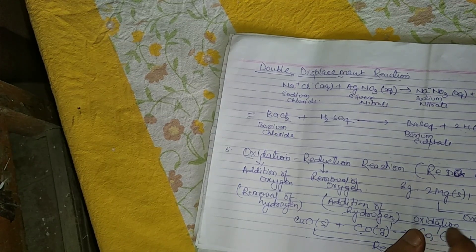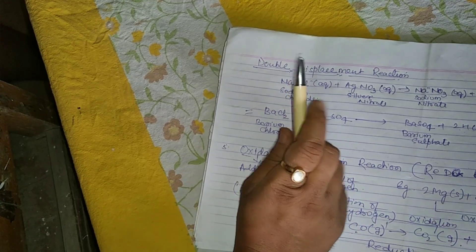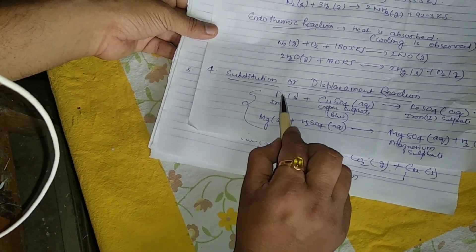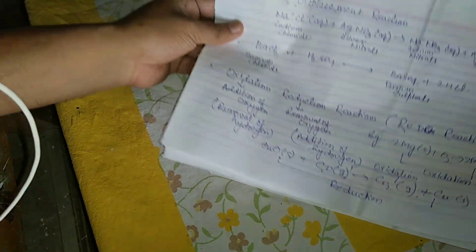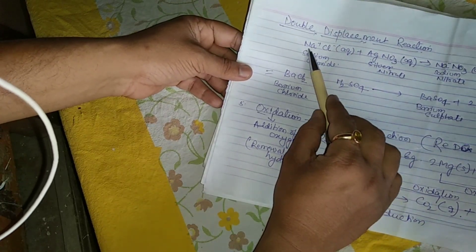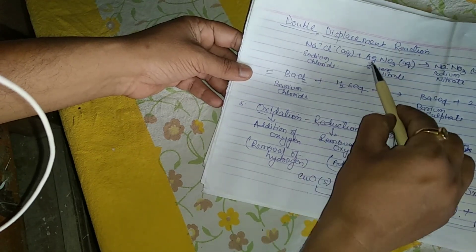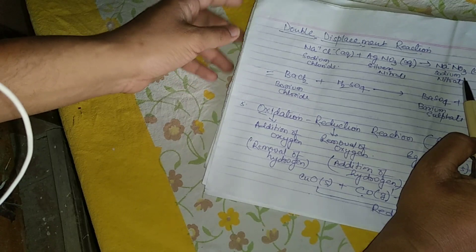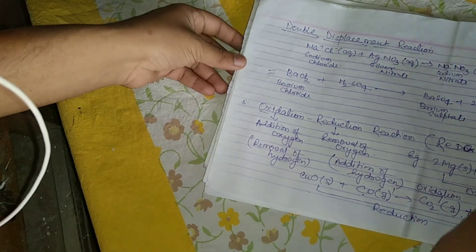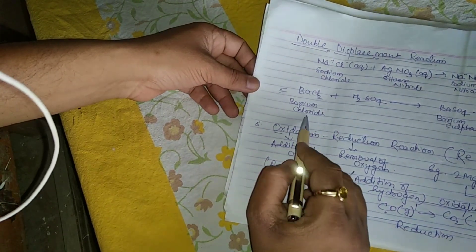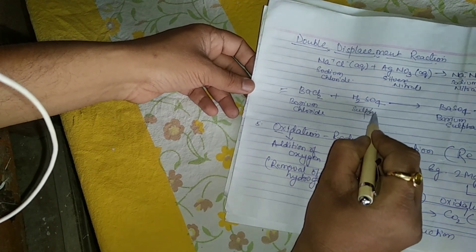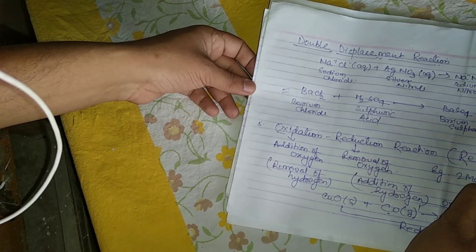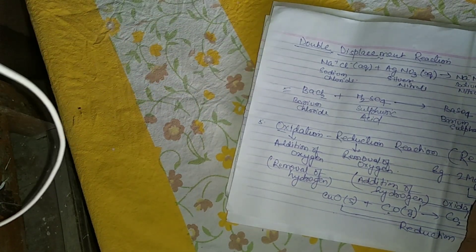Now, the double displacement reaction — this has been asked many times in board exams, and it is also an example of a precipitation reaction. In a single displacement reaction, only one element changes its place. In a double displacement reaction, two elements simultaneously change their places. For example, sodium displaces silver and silver comes with chlorine, while sodium goes with nitrate, forming sodium nitrate and silver chloride. Another important example: barium chloride reacts with sulfuric acid, and barium displaces hydrogen to form barium sulfate (BaSO4) and two moles of hydrochloric acid (HCl).